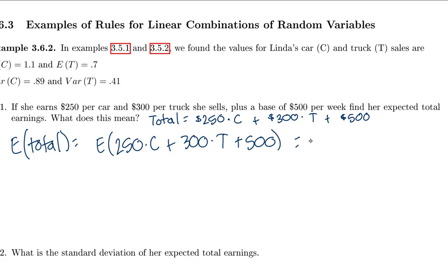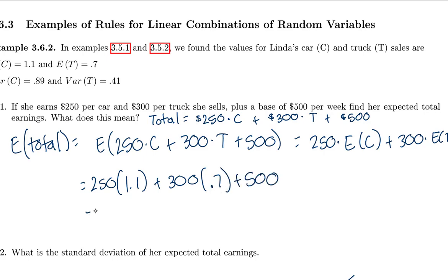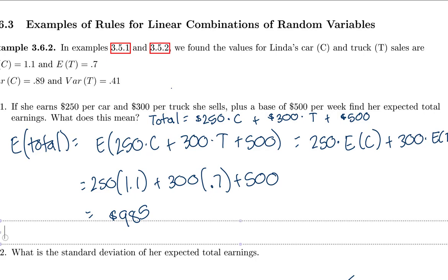To find the expected total, we apply our rules. The expected value of 250C + 300T + 500 equals 250 times E[C] plus 300 times E[T] plus 500. That's 250×1.1 + 300×0.7 + 500 = 275 + 210 + 500 = 985. So on average, she'll make a total of $985 per week.